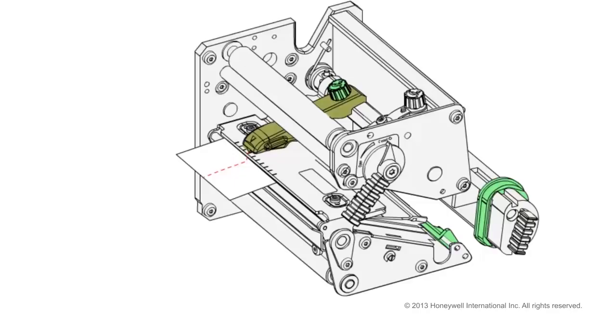If the arm is difficult to move, lift the printhead and free the printhead bracket from the magnet in the pressure arm by holding the front of the arm in place while pushing down on the printhead.